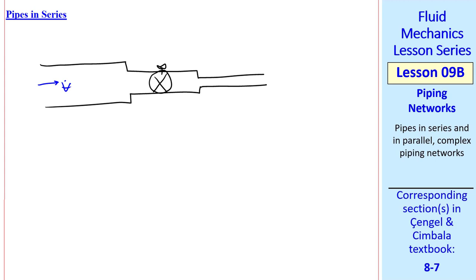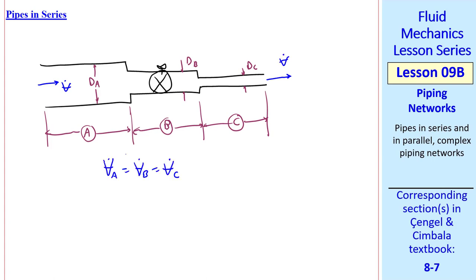There's some volume flow rate through this pipe. We'll call this section A, section B, and section C. Pipes are of diameter DA, DB, and DC. If there are no leaks anywhere, V dot has to be the same in all three sections of pipe. V dot A equal V dot B equal V dot C, where we're assuming incompressible and steady flow.